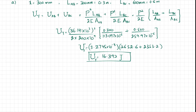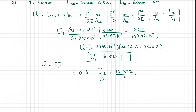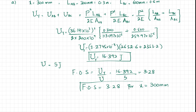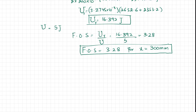With U_y equal to 16.392 joules and the given applied strain energy U equal to 5 joules, the factor of safety equals U_y / U = 16.392 / 5 = 3.28. So the factor of safety with respect to permanent deformation for x equal to 300 millimeters is 3.28.